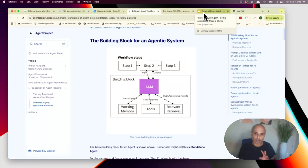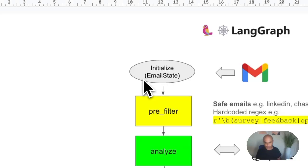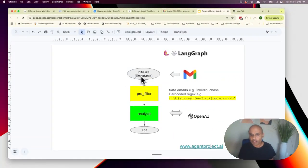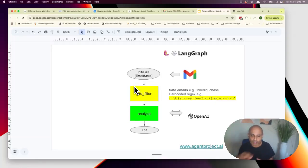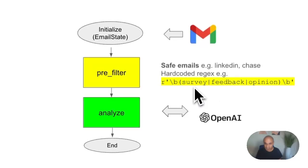Let's talk about the workflow state within LangGraph. I have an initialization state which reads emails from Gmail and manages them in something called an EmailState. Then I have a next node called pre-filter, which I call a smart node because I don't want to use OpenAI all the time. I have a safe emails list — any email from LinkedIn, my bank like Chase, or my mortgage goes through there — plus hardcoded regular expressions, like flagging surveys for unsubscribe.